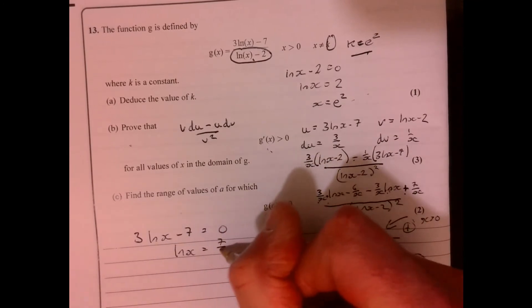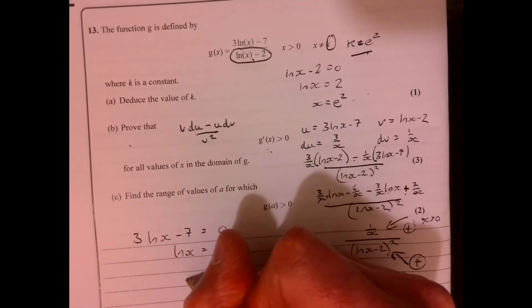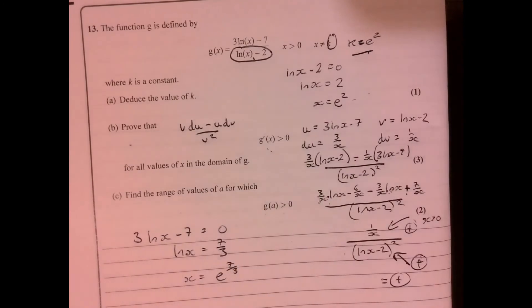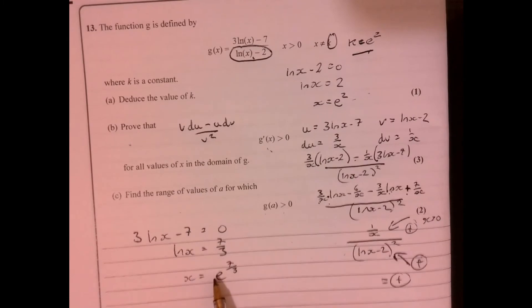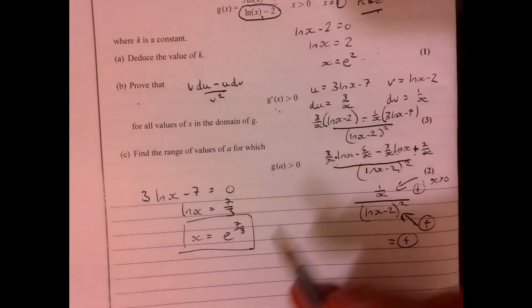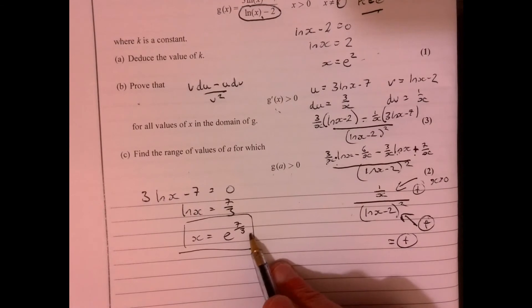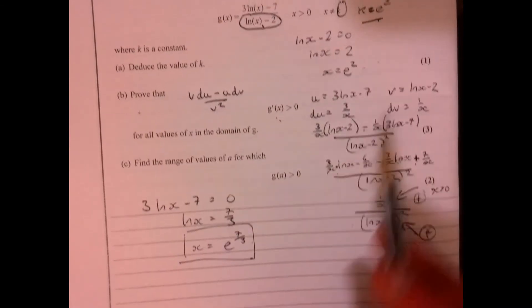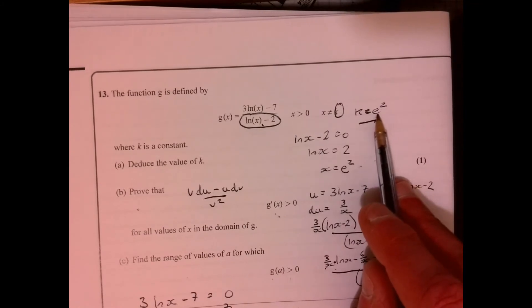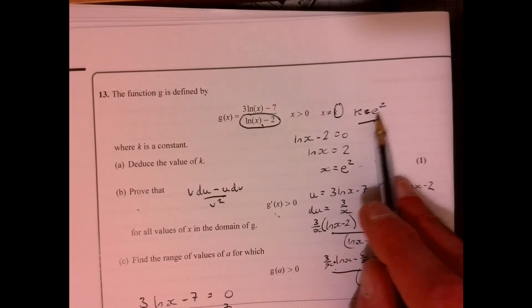E both sides, so e to the 7 over 3. So I want the numerator to be more than this, and that will give me a positive. Now, if you remember this value up here as well, e squared here.